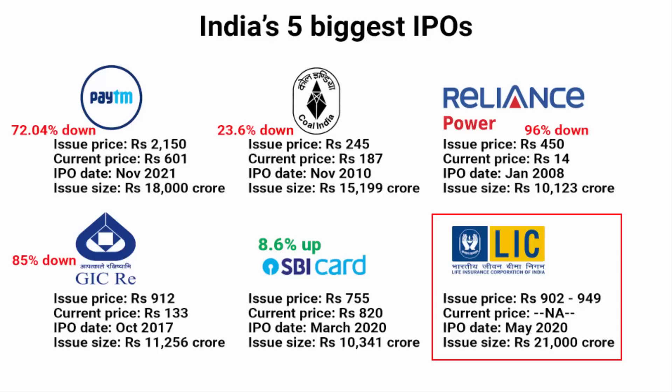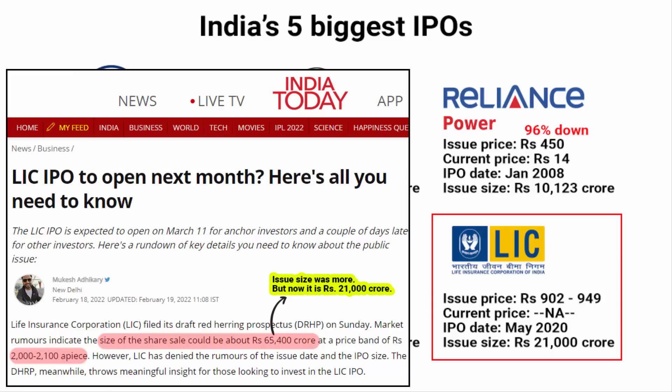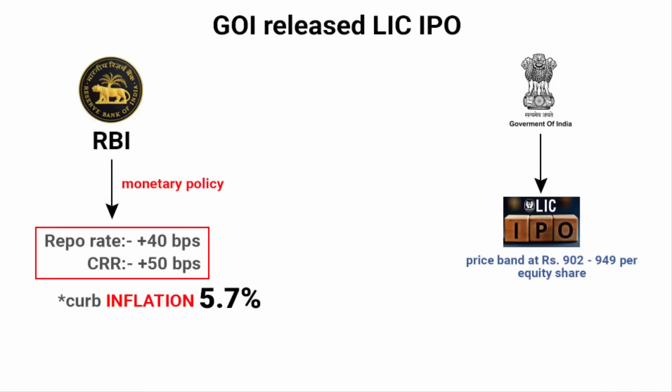Now the question is: when the country is going through high inflation and monetary policy has been enacted to curb inflation — meaning a liquidity crunch is coming in the market — how come the government fixed the price band at such a low price? This raises a lot of questions. Is the government trying to lure the public into putting their money in LIC shares? Is the government trying to push the public into buying LIC shares and shift the burden onto retail investors? There are many such questions.